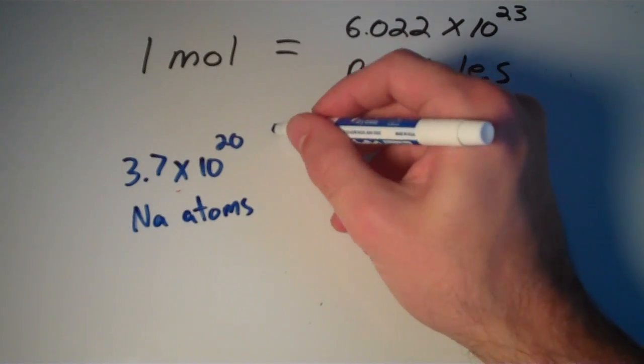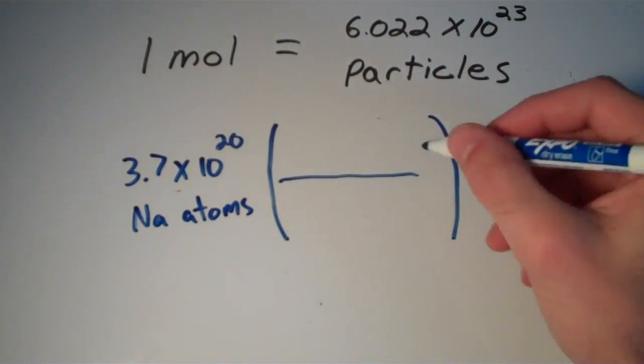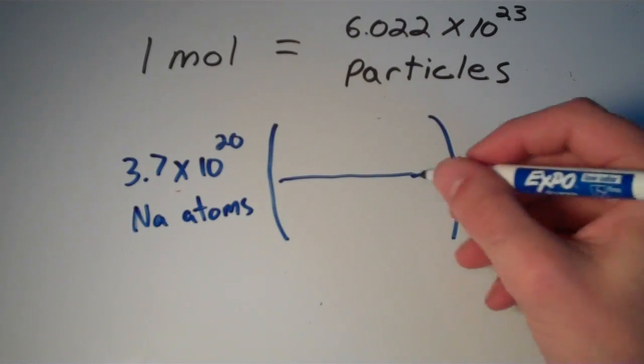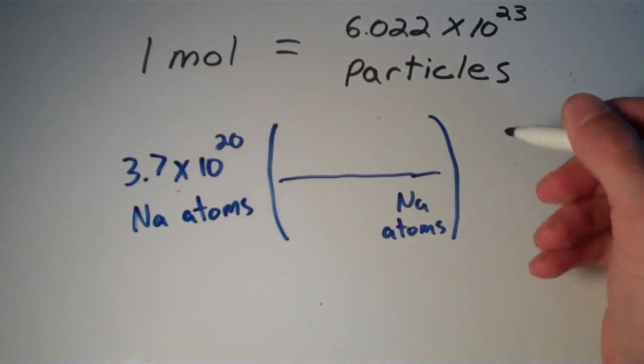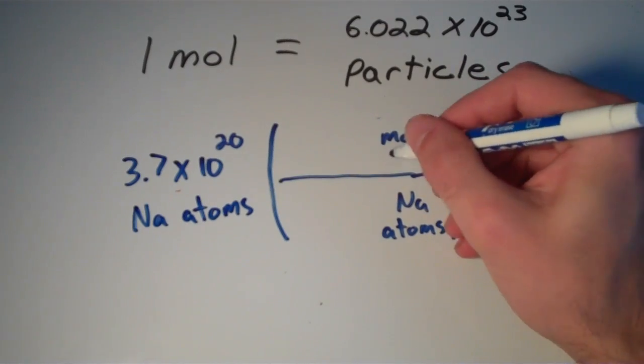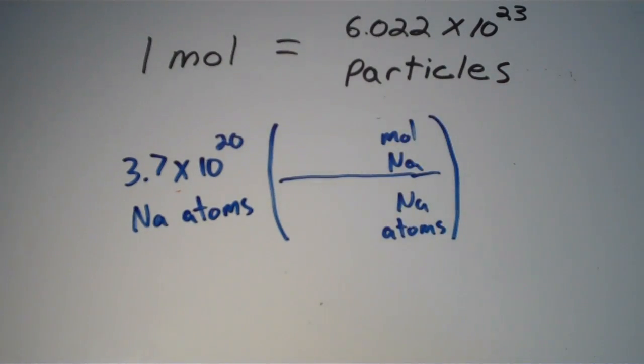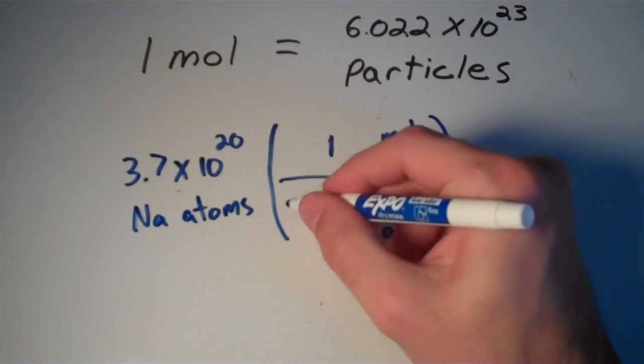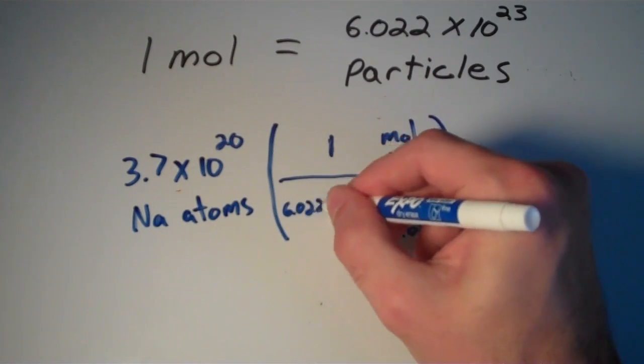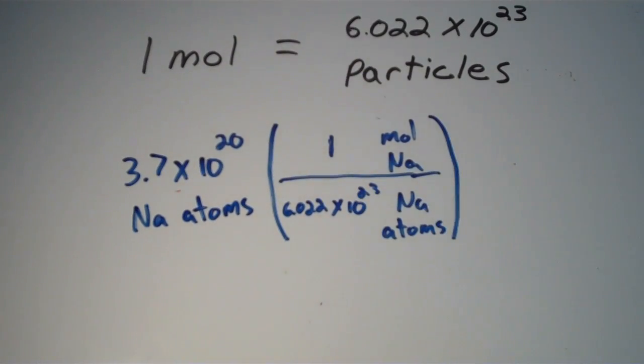So I'm going to set up my conversion factor. I'm going to put sodium atoms at the bottom and I'm going to put moles of sodium at the top. And once again, for every 1 mole of sodium, we're going to have 6.022 times 10 to the 23rd sodium atoms.